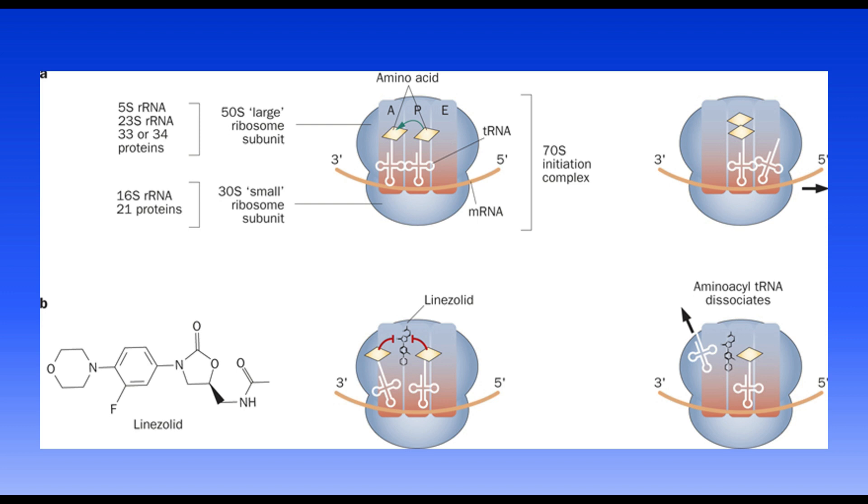Getting into the mechanism, this is how it does it. If you recall, the initiation complex consists of the messenger RNA, the transfer RNA, and all of that bound together in the ribosomal RNA or ribosomal subunits. The area that Linazolid acts on is the 23S rRNA of the 50S large ribosomal subunit. Linazolid binds there to that 23S portion and prevents the formation of the initiation complex.